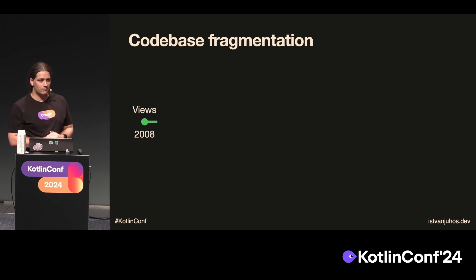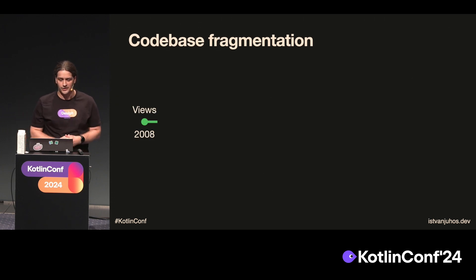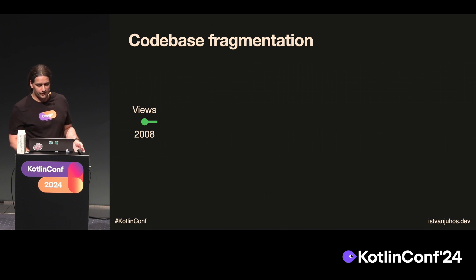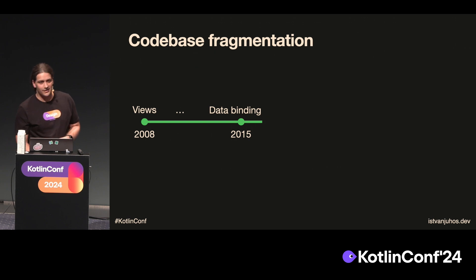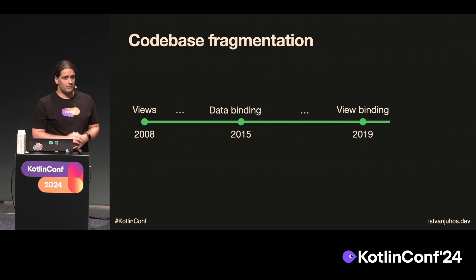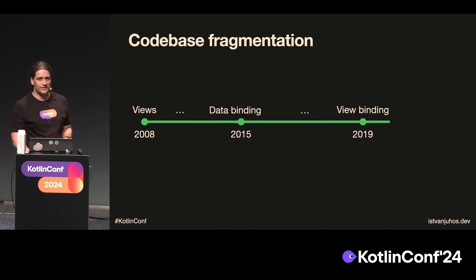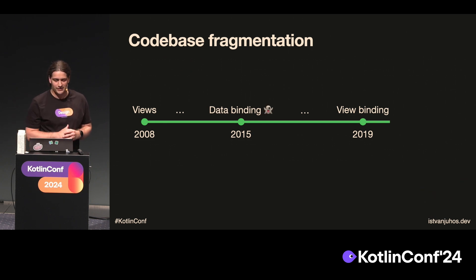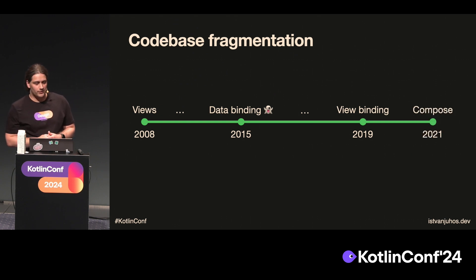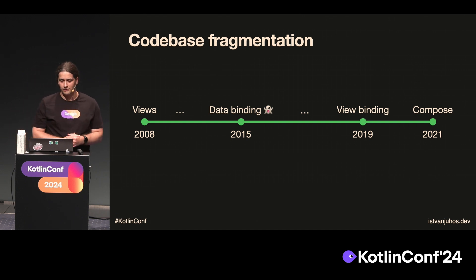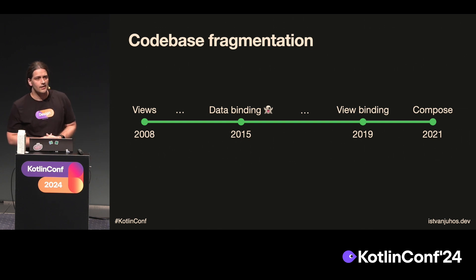Regarding code base fragmentation, we have quite a history to catch up with. For a long time we have had Views, which is kind of the same age as Android itself. Then after some years we had data binding, and after some more years we got view binding. And probably those things are haunting you in your dreams and your daily jobs as well. Getting Compose in 2021 was a delightful addition — finally a declarative UI framework. Finally we could move away from views, leave those things behind. Well, or can we?